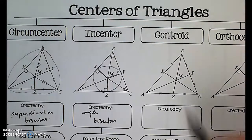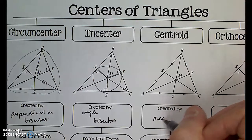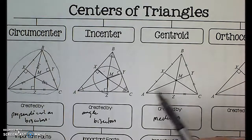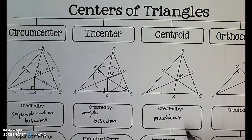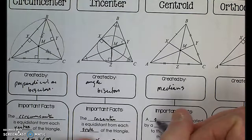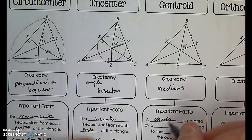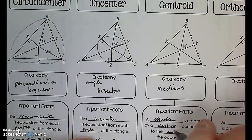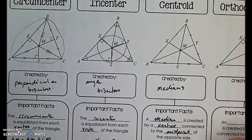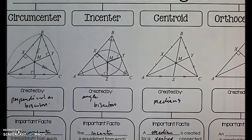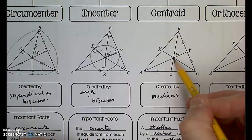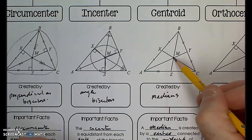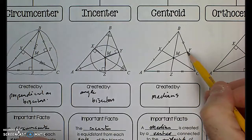Let's move on to the centroid. We create it as the point of intersection of the medians. The medians are lines joining a vertex to the midpoint of the opposite side — you can see that from the tick marks. So a median is created by connecting a vertex to the midpoint of the opposite side. We discovered that the distance from vertex A to the centroid M is twice the distance from the centroid to the point of intersection on the opposite side.